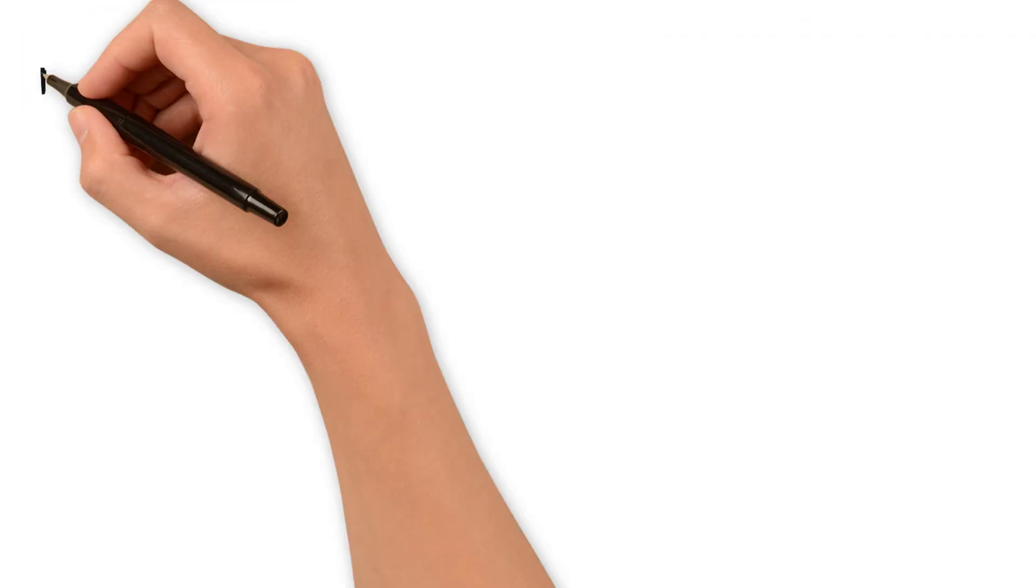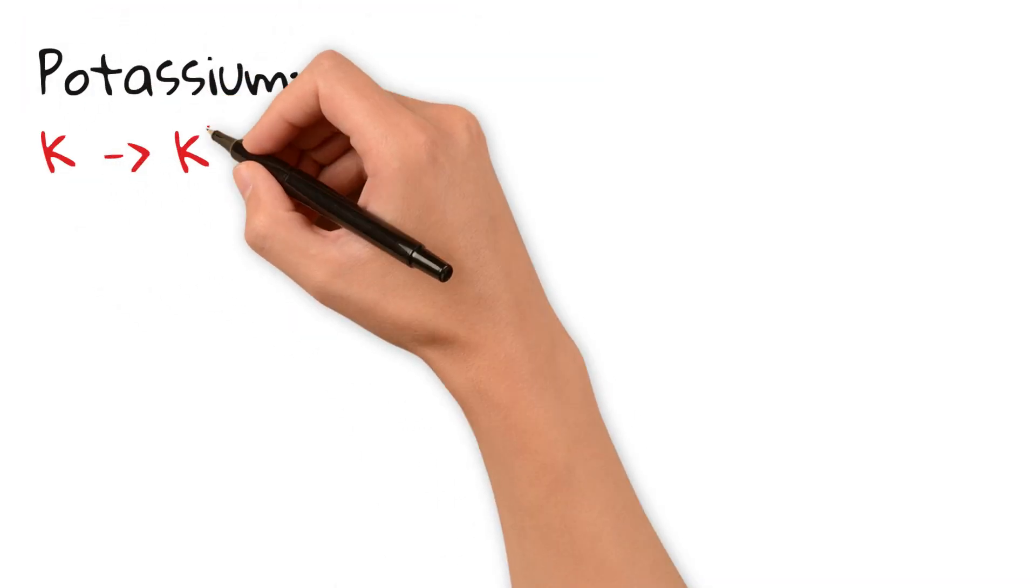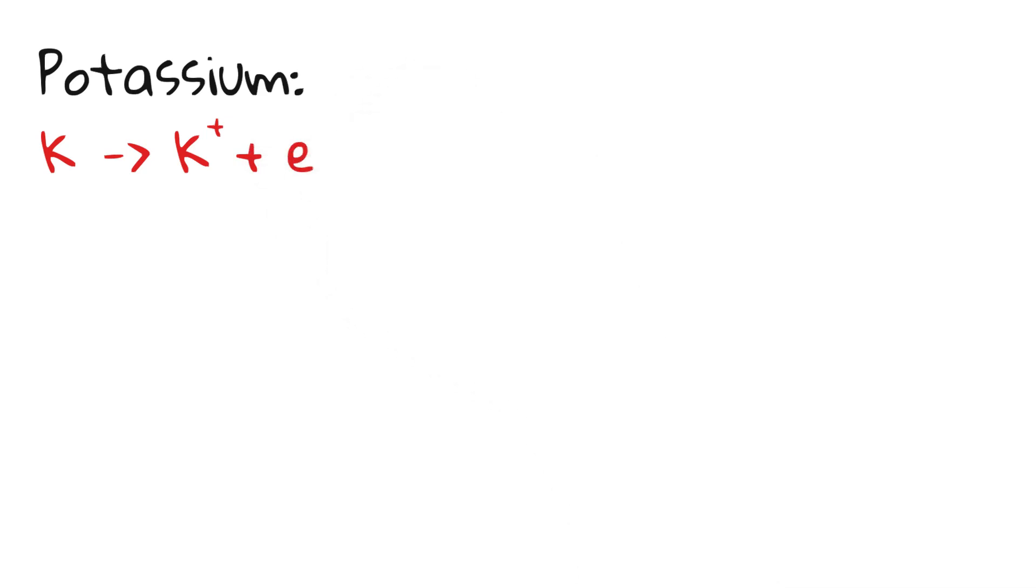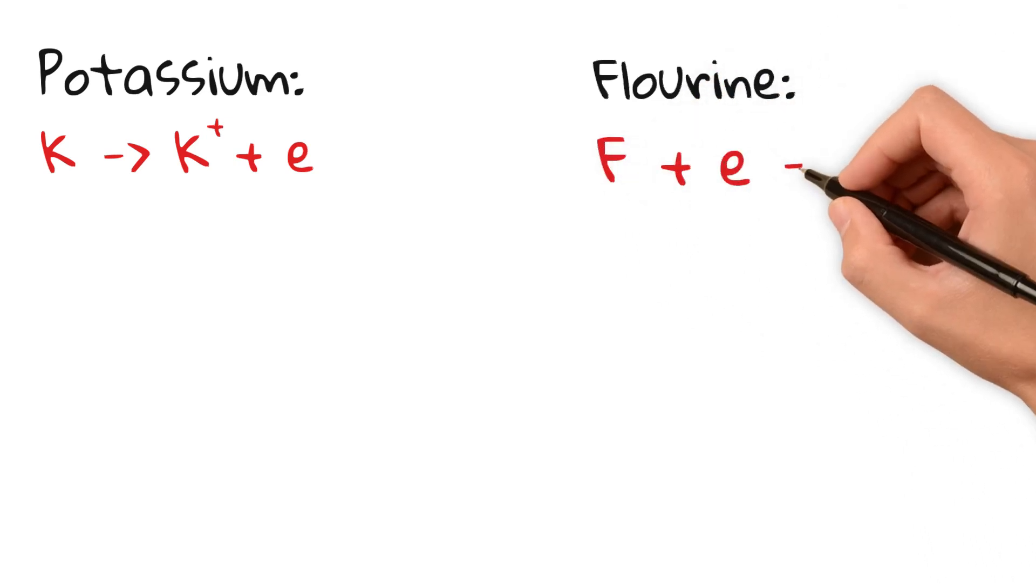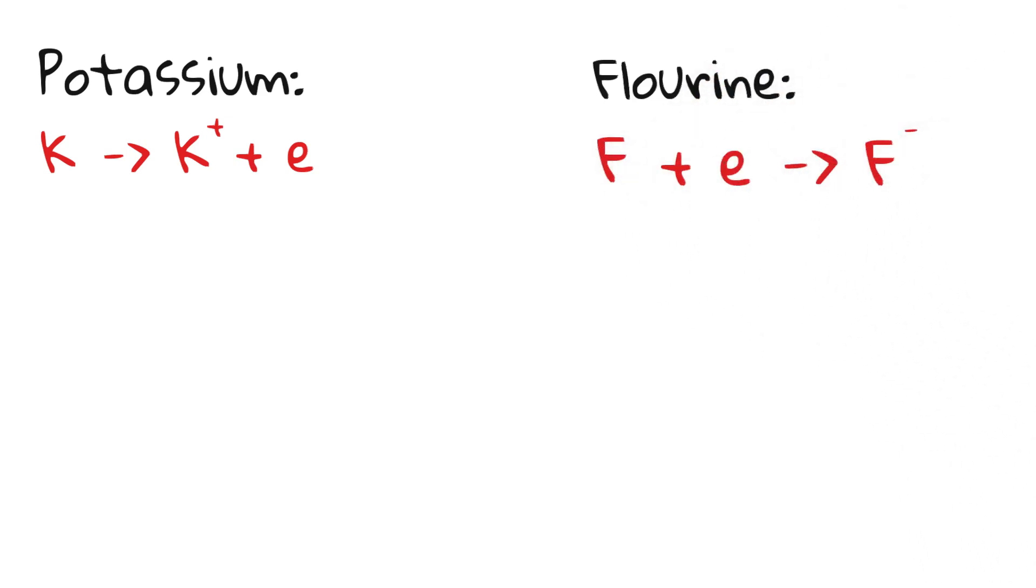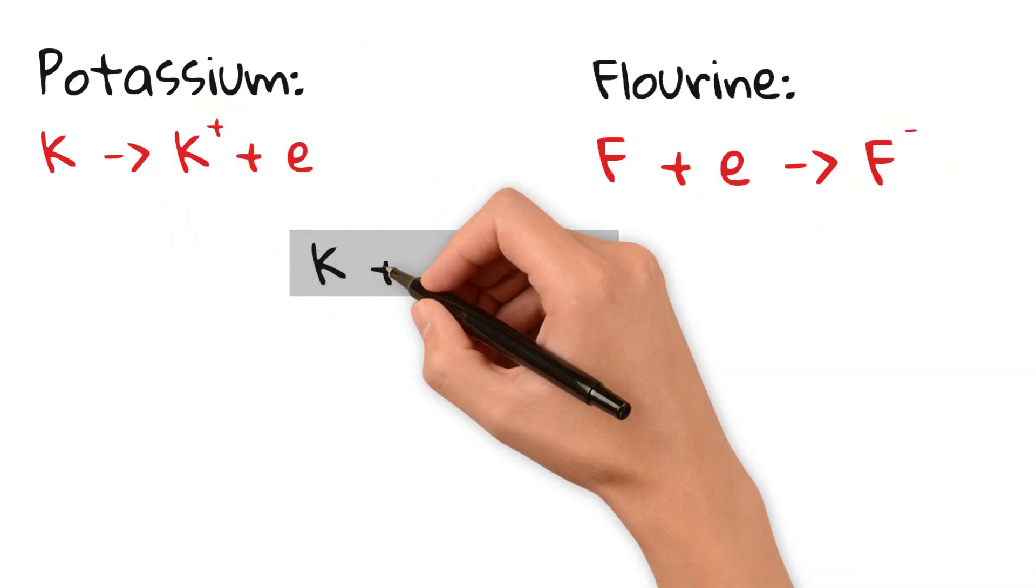Here's the answer. Potassium is a metal with one electron in its outer shell. It loses this electron forming a K+ ion. Fluorine is a non-metal with seven electrons in its outer shell. It gains one electron forming an F- ion. The K+ and F- ions attract, forming an ionic bond.